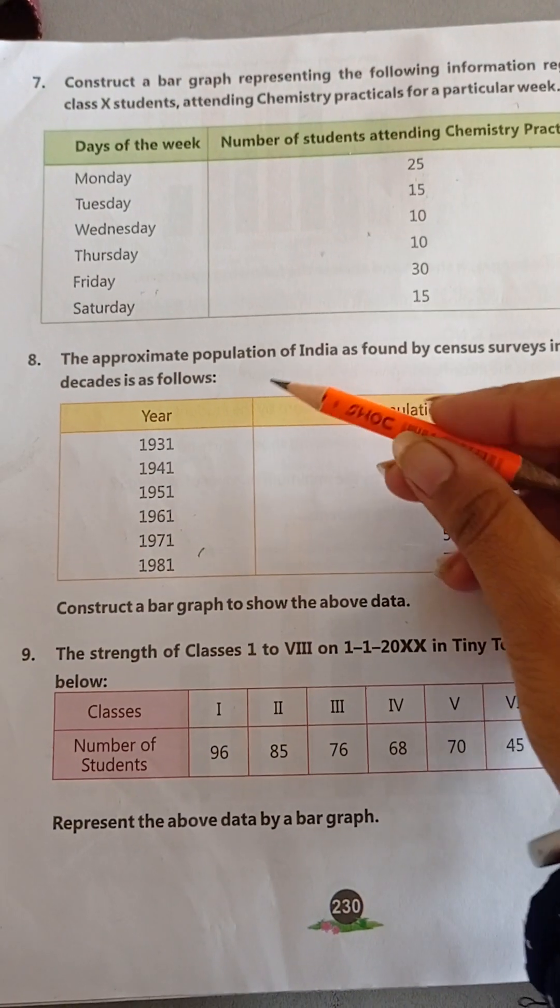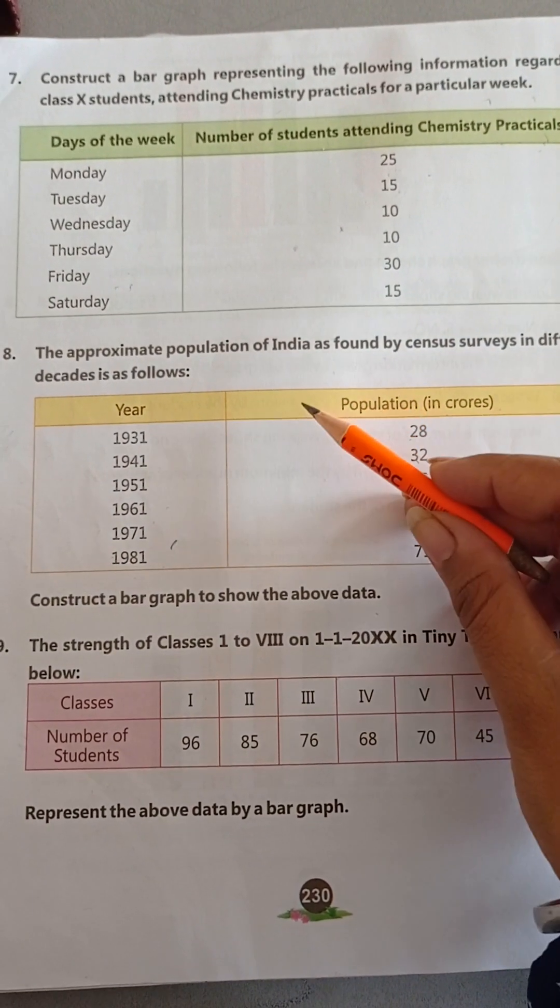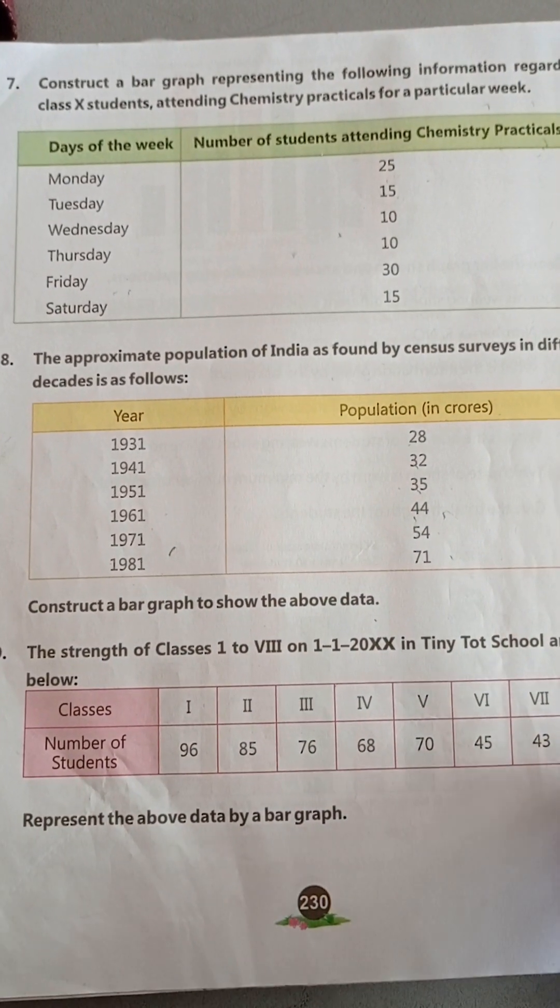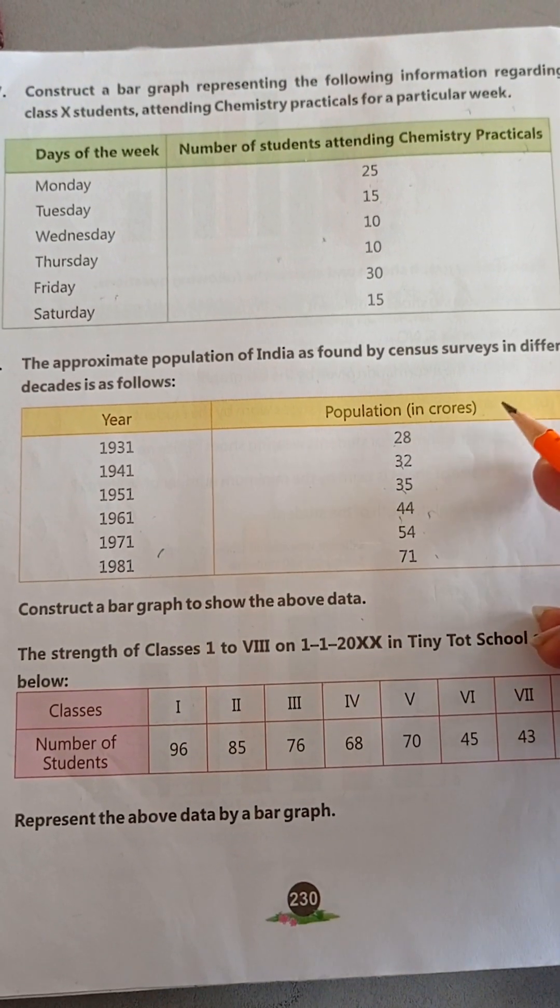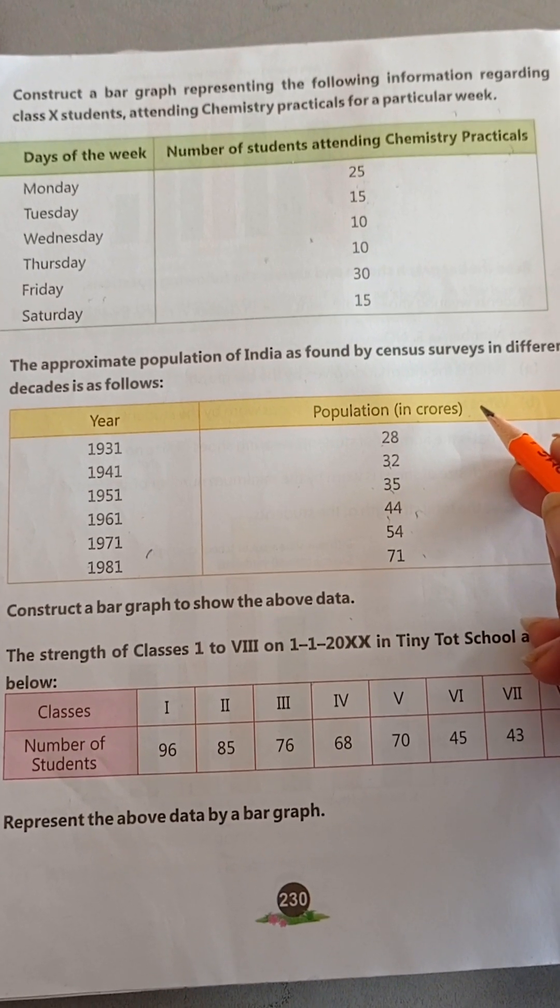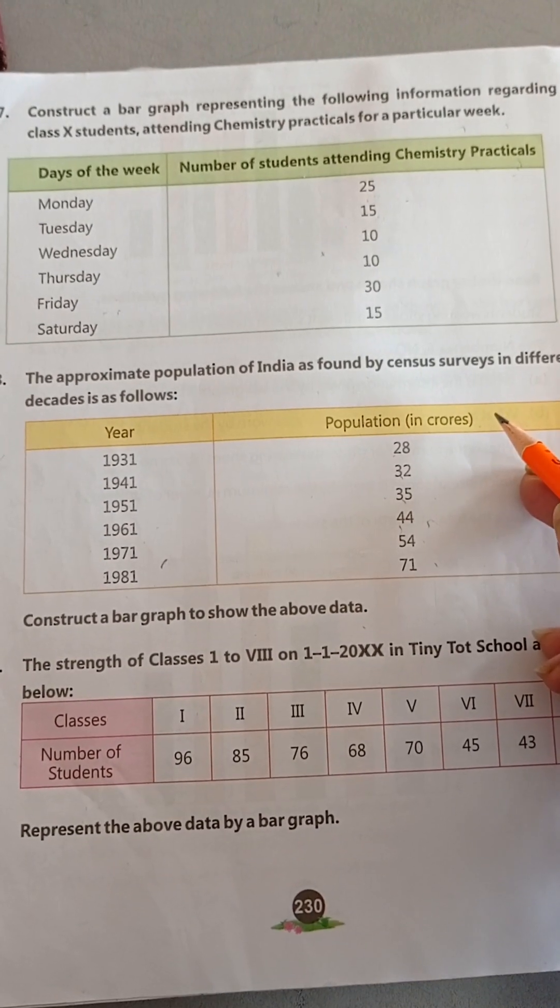Now, question number 8. The approximate population of India is found by census surveys in different decades is as follows. This bar graph is given the information about population, about the census surveys in different decades, in different years.